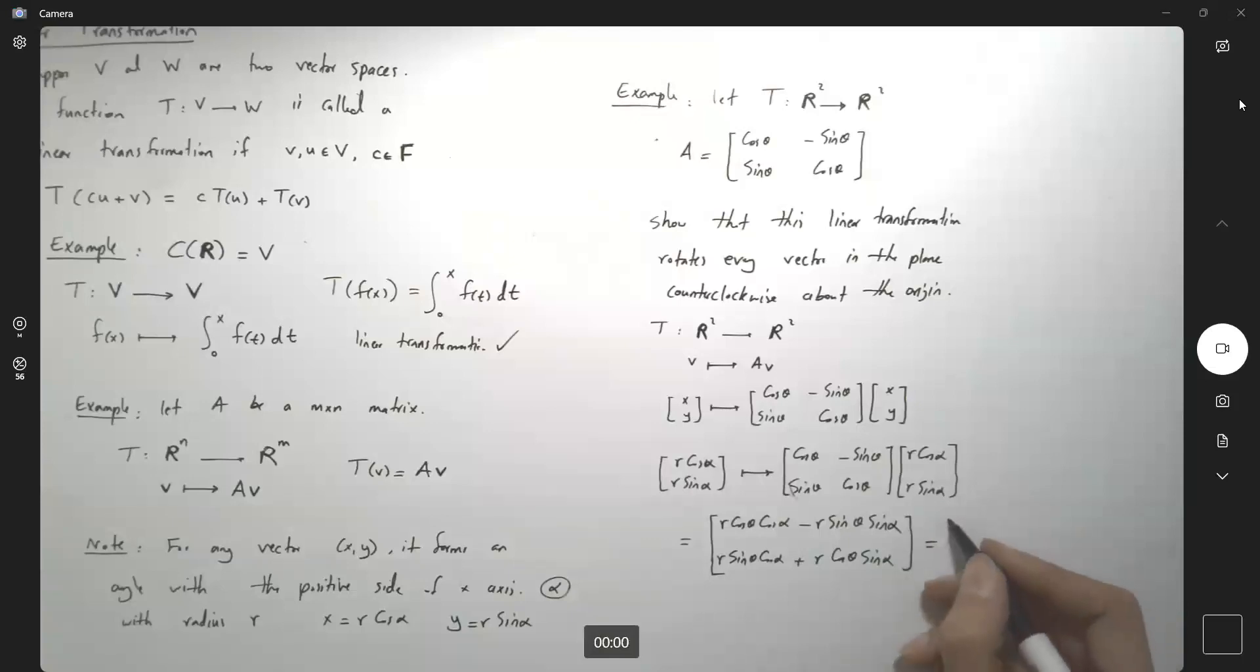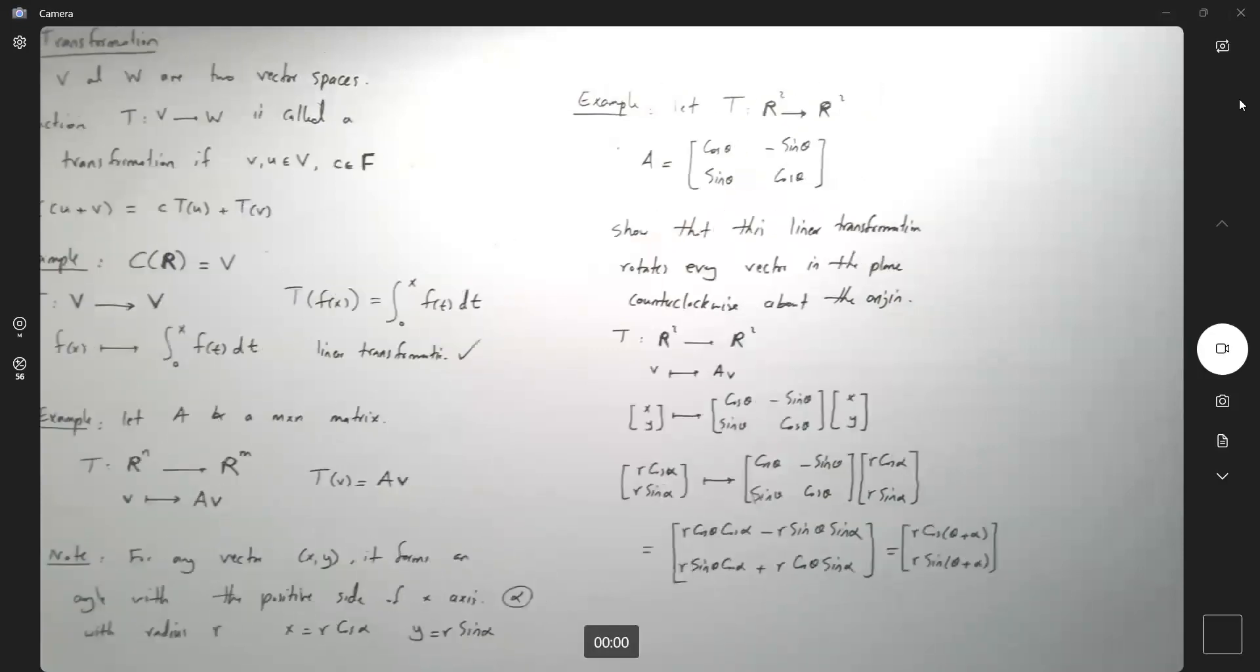So, this guy is equal to R cosine theta plus alpha, and here you have R sine of theta plus alpha.